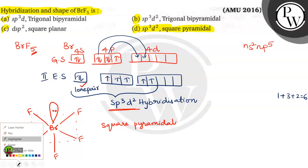Option 4 is correct. Option A, SP3D2 is wrong. Option C, SP3D2 is wrong. Option B, SP3D2 is wrong, and trigonal bipyramidal shape is wrong. So option B is wrong. So option D is correct. Hope you understood. Good luck.